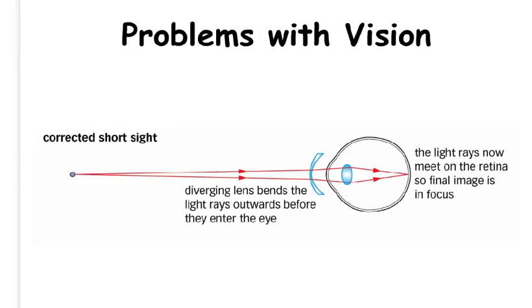Short-sight can be corrected using a diverging or concave lens to bend the rays of light outward before they enter the eye. This means the rays of light now meet on the retina and so the final image is in focus.